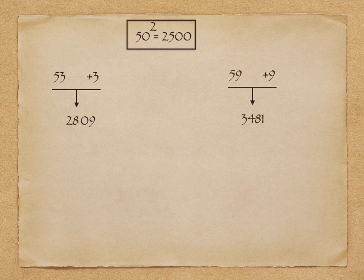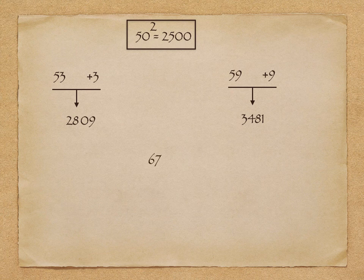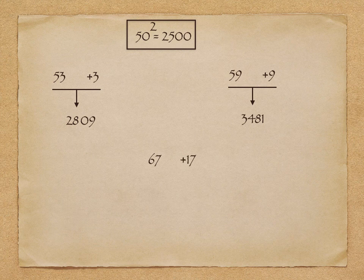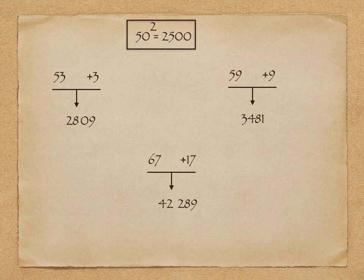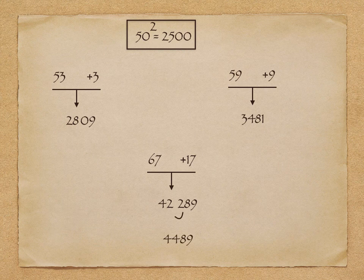And the very last example, suppose the number is 67. 67 is 17 more than 50. Now add this 17 to 25, it will be 42, and the square of 17 is 289. Now I need to adjust this 289 in two-digit form, so I will add this 2 to the number 42, it will be 44, so 4489 is the final answer. Thank you friends.